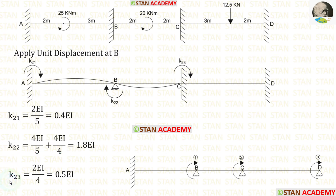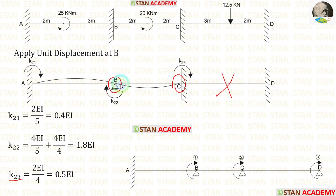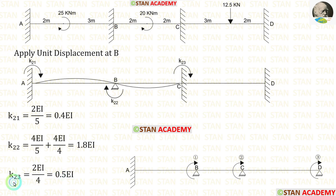Now let us calculate k23. From point C, the right side has no slope curve so no stiffness value. On the left side there is a hinged support, so the formula is 2EI/L with length CB = 4 m. Therefore k23 = 0.5EI.